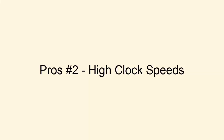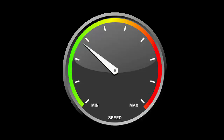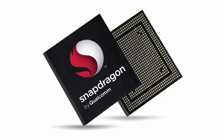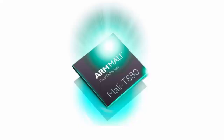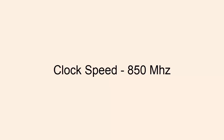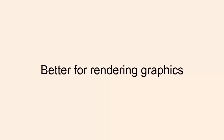Number two: High Clock Speeds. Mali GPUs have higher clock speed than most of the Adreno GPUs even at the top end. For example, the popular Snapdragon 625 has an Adreno 506 GPU which has a clock speed of 650MHz, while in the same segment the Mali T880 offers a clock speed of 850MHz. As a result, Mali GPU is better suited for rendering graphics.